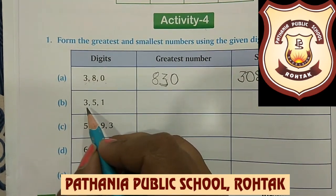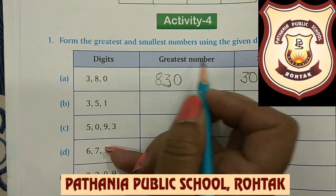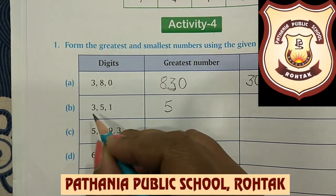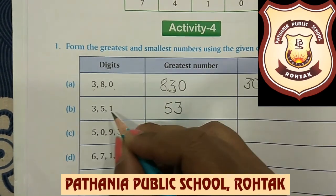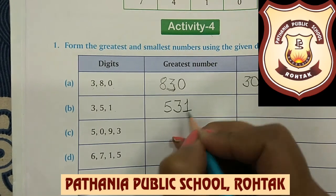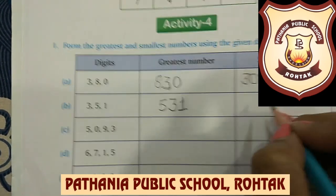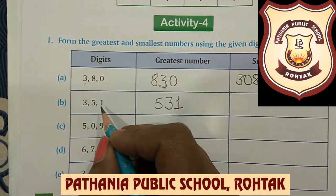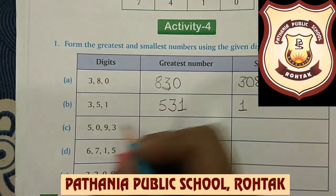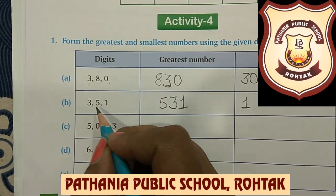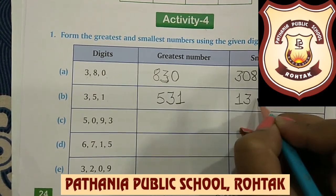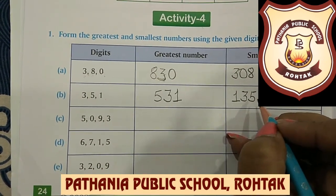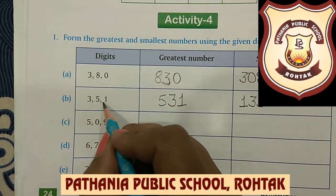Now Part B: the digits are 3, 5, and 1. For framing the greatest number, the greatest digit is 5, so we write 5 first. After 5, the next greatest is 3, so we write 3. Then the smallest is 1, so we write 1. So 531 is the greatest number. Now for the smallest number, the smallest digit is 1, so we write 1 first. Then 3, then 5. So 135 is the smallest number formed from digits 3, 5, and 1.